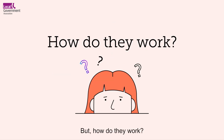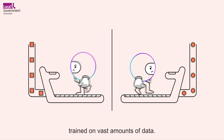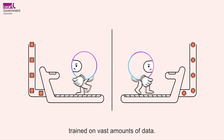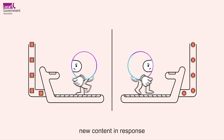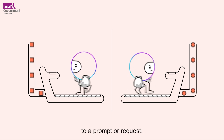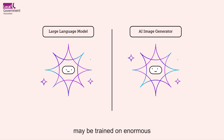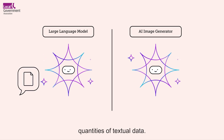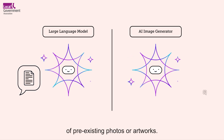But how do they work? Generative AI systems use models trained on vast amounts of data. These datasets enable the system to create new content in response to a prompt or request. For example, a large language model may be trained on enormous quantities of textual data, whereas an AI image generator may be trained on a dataset of billions of pre-existing photos or artworks.